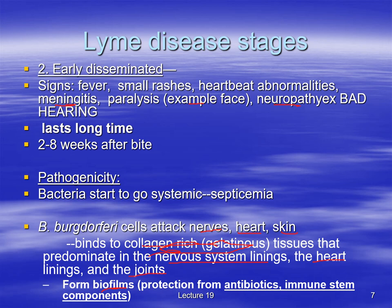Biofilms — formed using glycocalyces and pili — protect the bacterium from antibiotics and from immune system components like phagocytes. That's why these bacteria can persist for quite a long time in the body. One to four weeks for stage one, two to eight weeks for stage two, and things can last for months. The immune system struggles to reach the bacteria in biofilms, especially in collagen-rich areas.